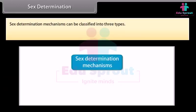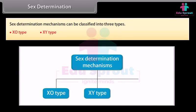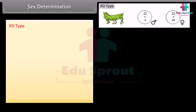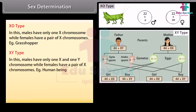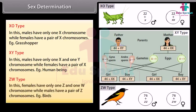Sex determination mechanisms can be classified into three types: XO type, XY type, and ZW type. In XO type, males have only one X chromosome while females have a pair of X chromosomes — example: human beings. In ZW type, females have one Z and one W chromosome while males have a pair of Z chromosomes — example: birds.